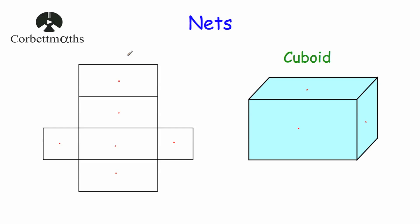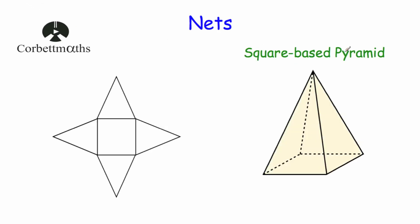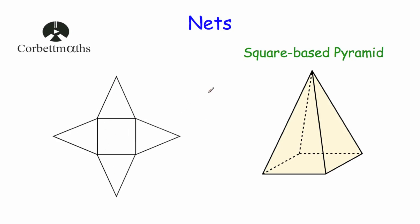Our next 3D shape is a square-base pyramid. A square-base pyramid consists of a square on the bottom and four triangles that fold up to meet at the top at the apex. So the net would have a square as the base and then four triangles, and whenever you fold those they would all meet at the point at the top of the pyramid. So the net of a square-base pyramid is a square with four triangles.